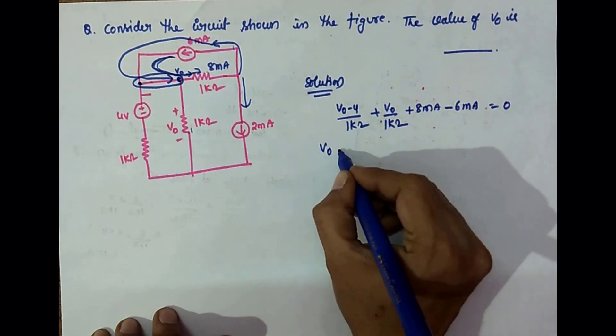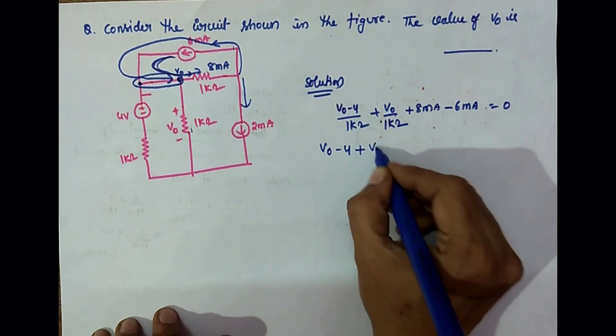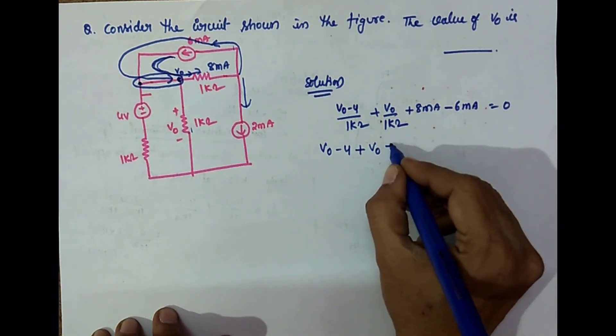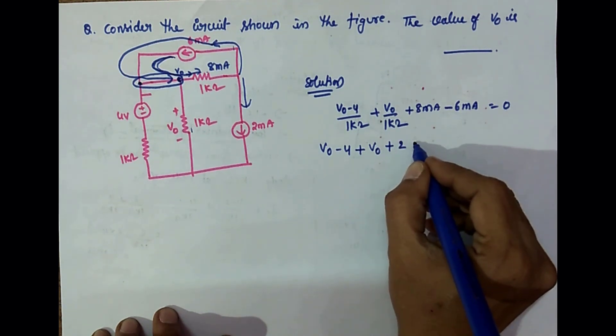So it is V0 minus 4 plus V0 plus 2 equals zero.